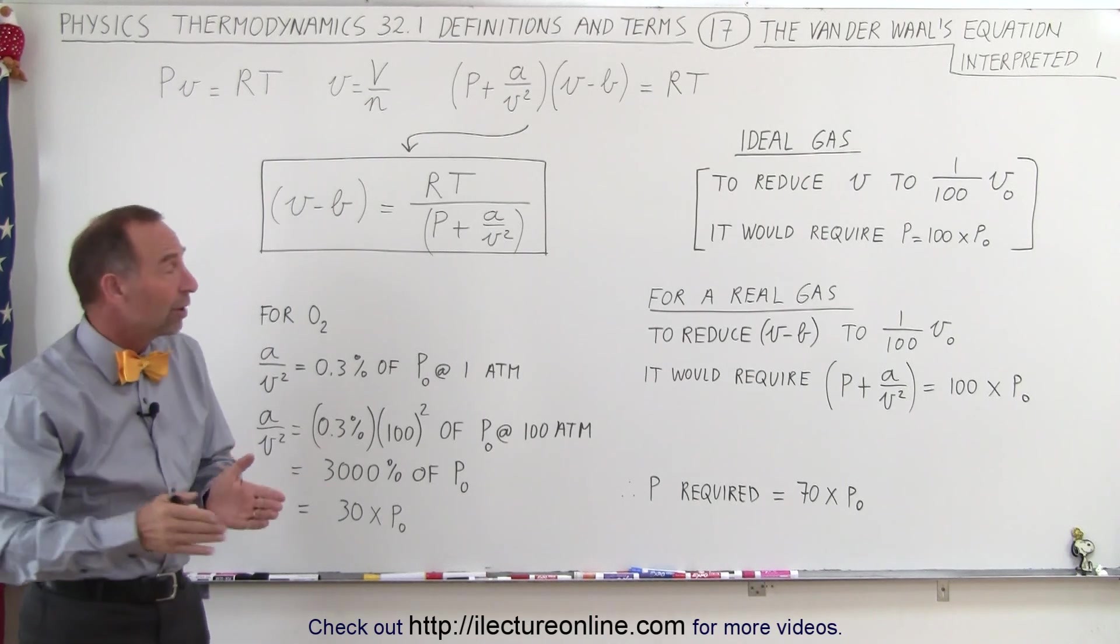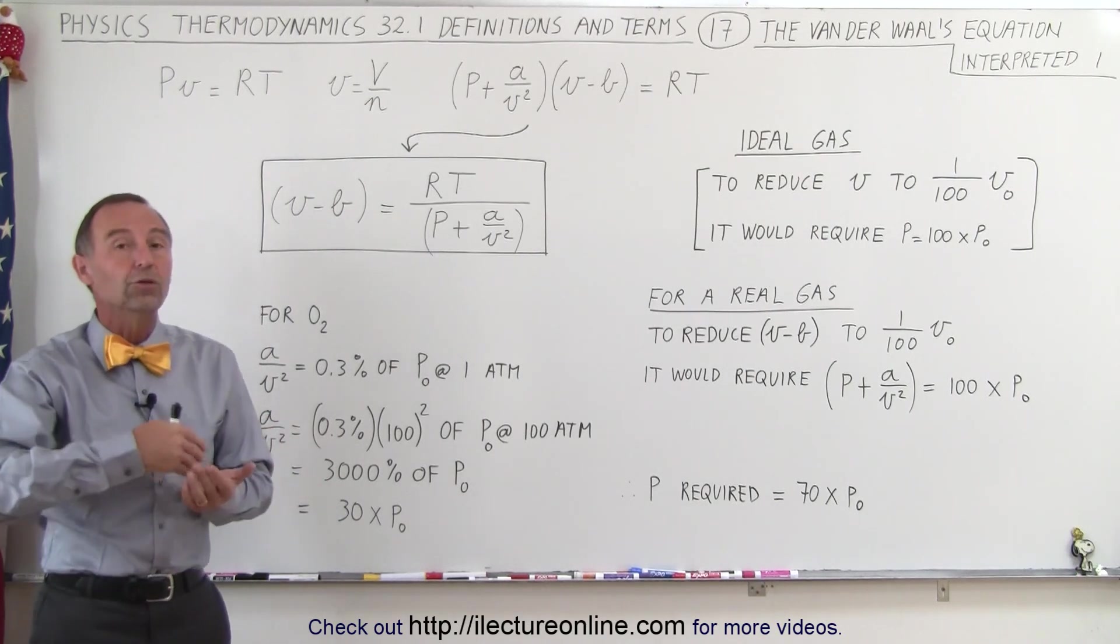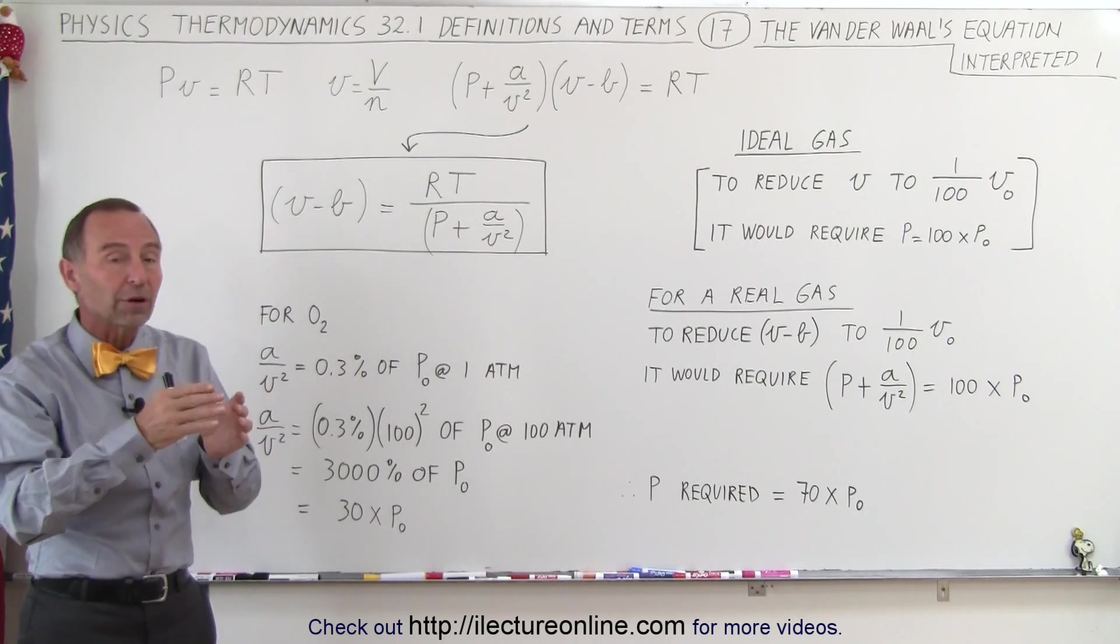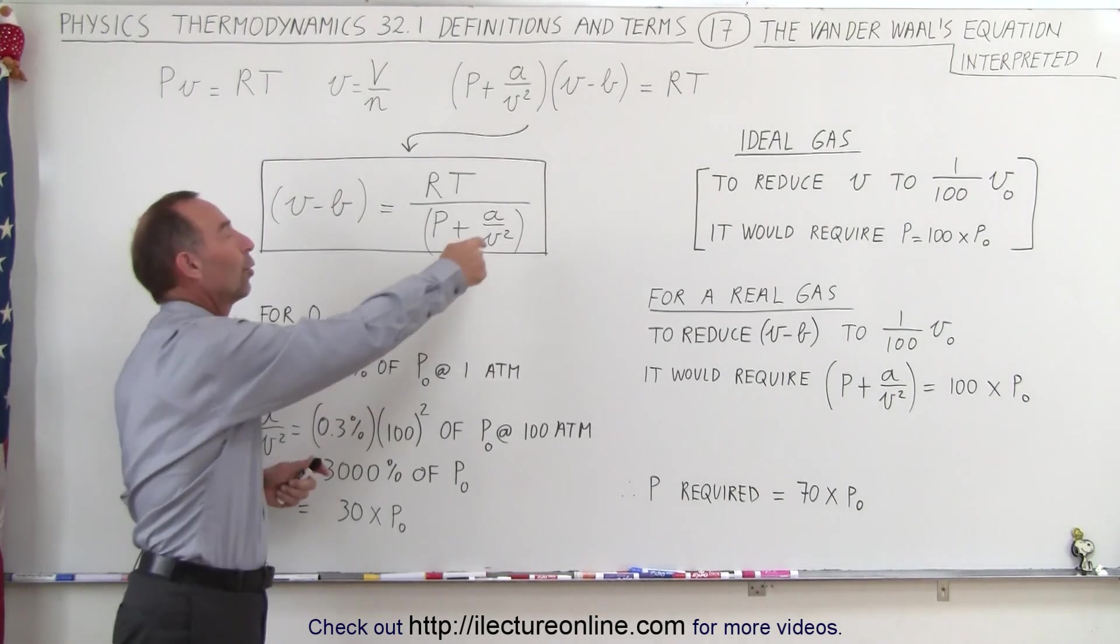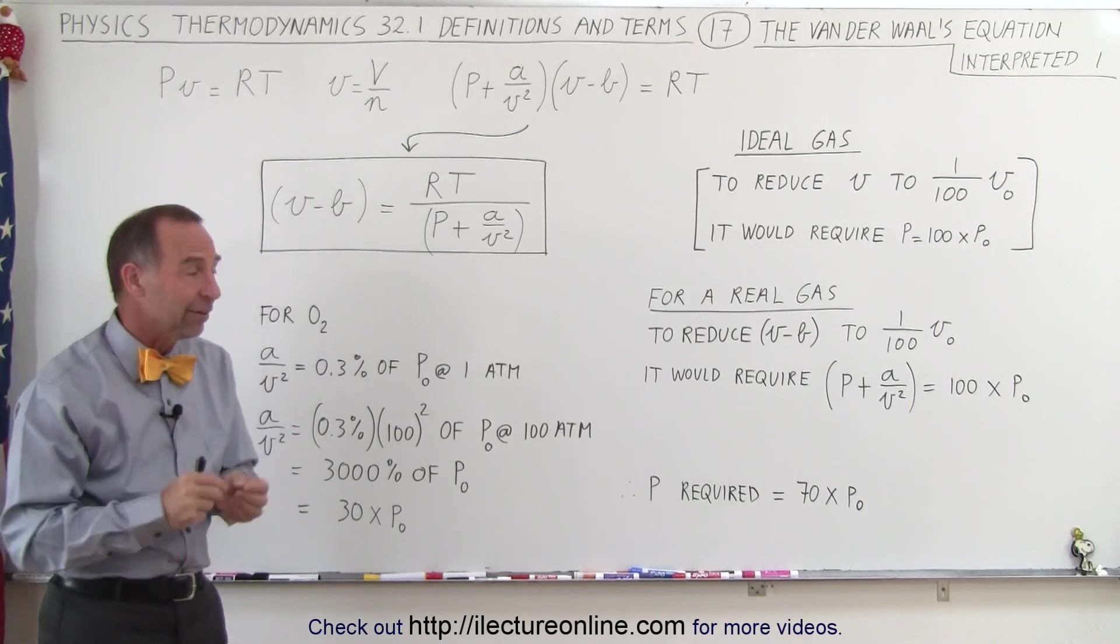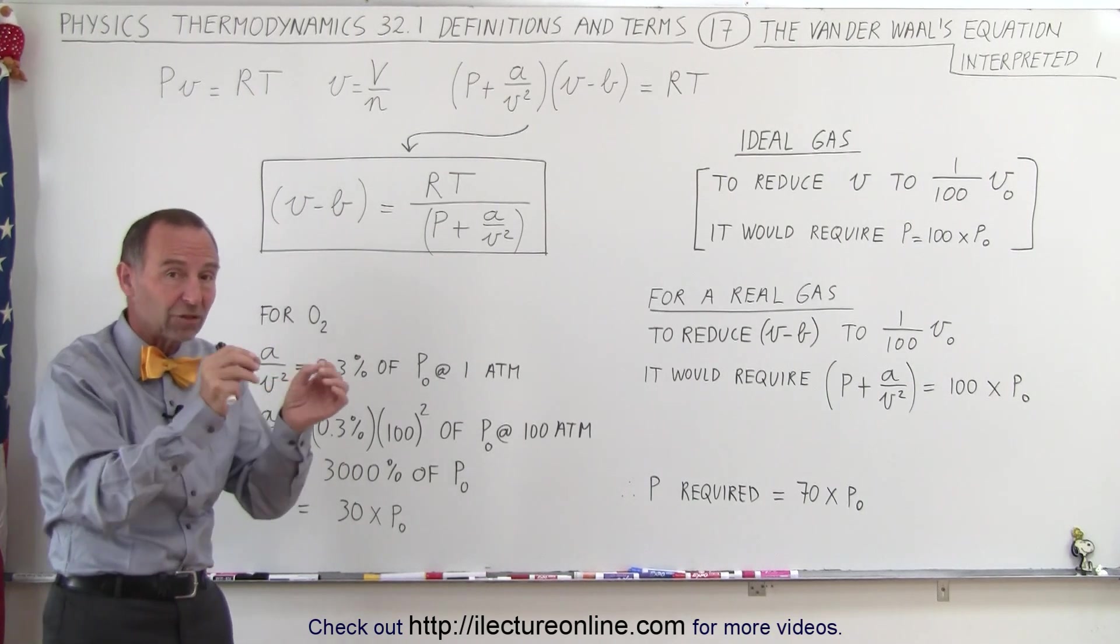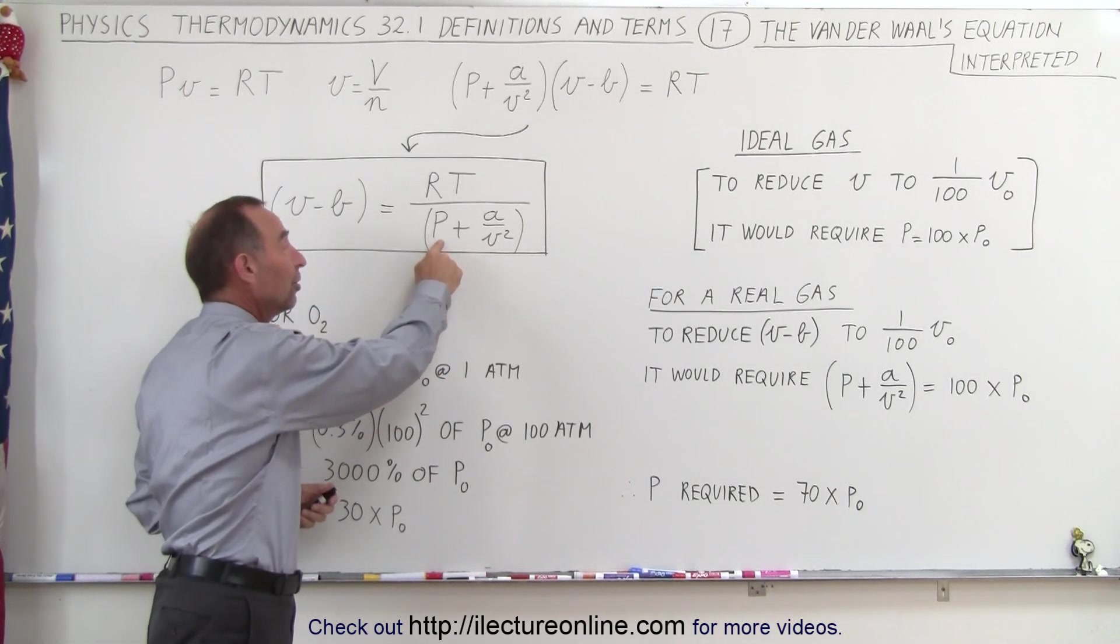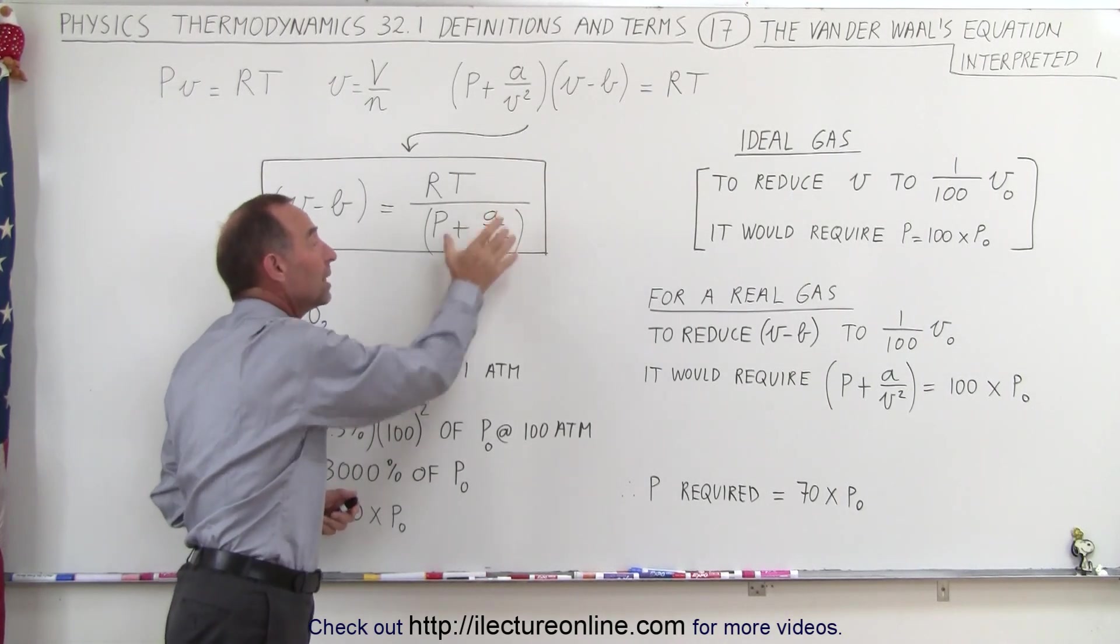And so you can see that the Van der Waals equation helps to determine what the new pressure should be, so that the effective pressure will be the new pressure plus, of course, a/v². Now, what we need to be careful of is that the pressure that we actually measure is the total pressure, meaning the effective pressure plus the term in here.